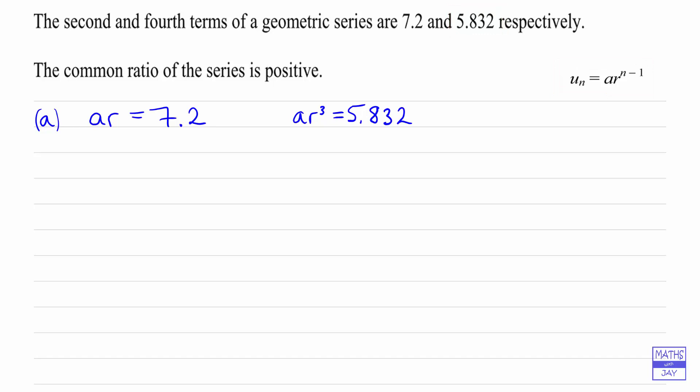In part a we've been asked to find the common ratio, so we're looking to find r. When we've got these kind of equations, the way to solve them is to divide one by the other and it's easier if we divide the one with a higher power of r by the other one. So let's have ar cubed over ar, and that's going to be equal to 5.832 divided by 7.2.